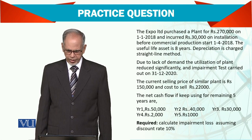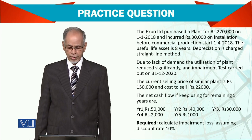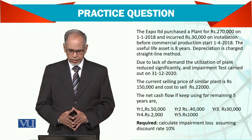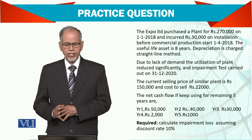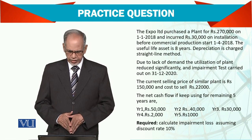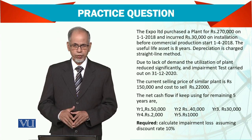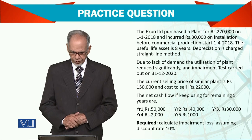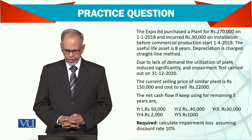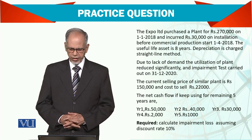The current selling price of a similar plant is $150,000 and the cost to sell is $22,000. So if you want to sell it now, you can recover only $150,000 but to sell it you incur a cost of $22,000. The net cash flows from keeping it in use for the next 5 years — because 3 years have expired — are: 1st year $50,000, 2nd year $40,000, 3rd year $30,000, 4th year $2,000, and 5th year $1,000.